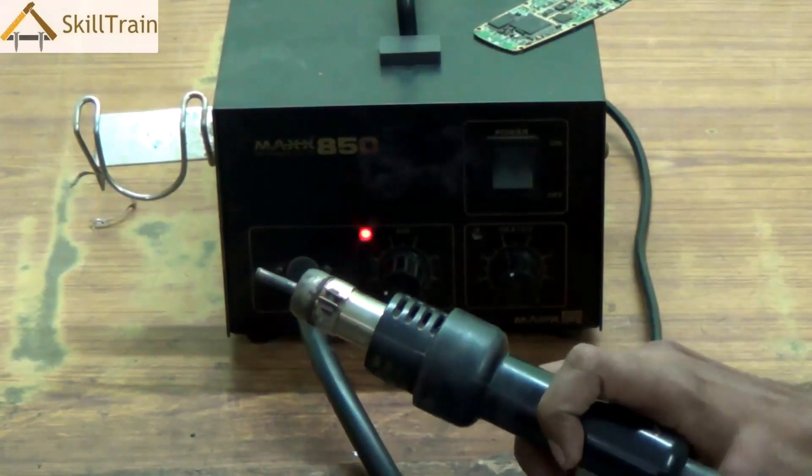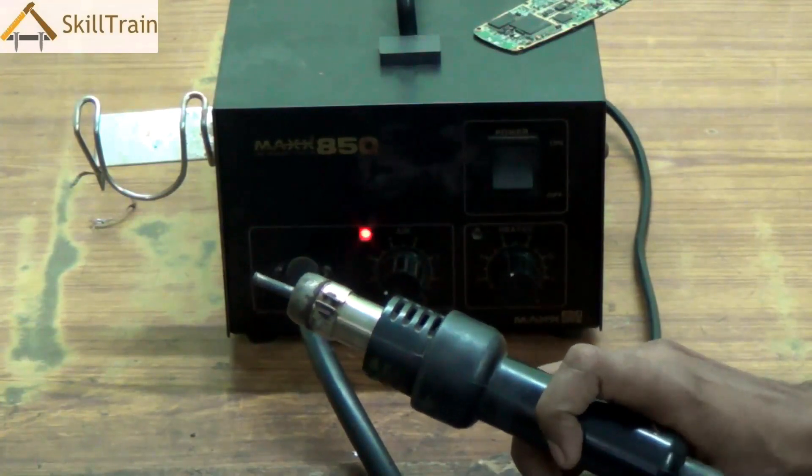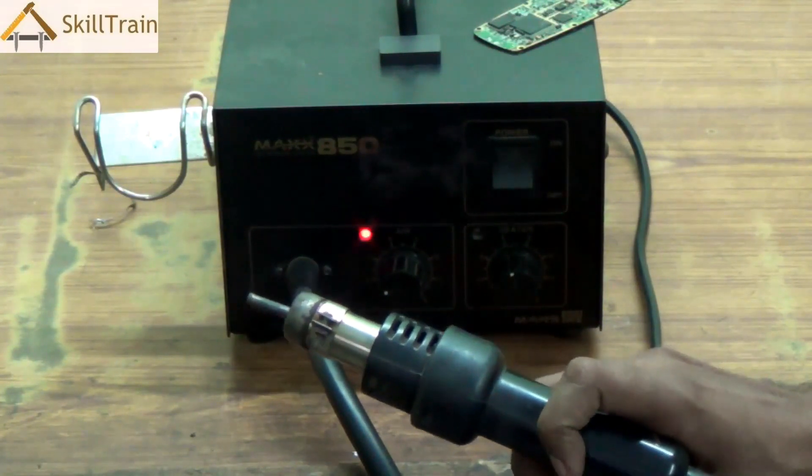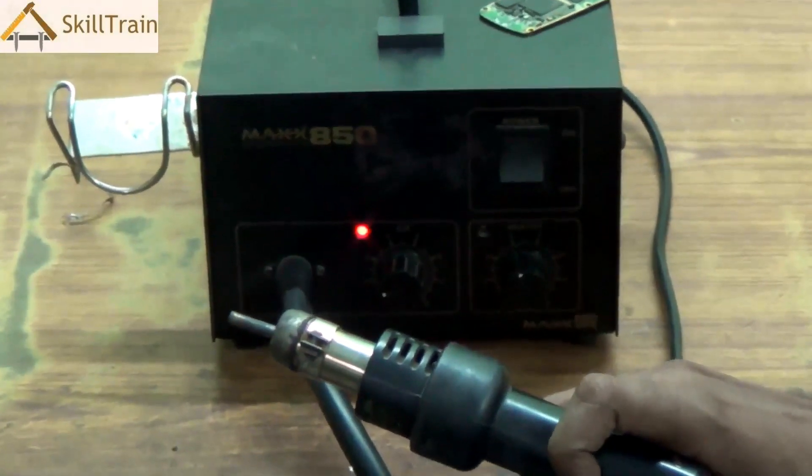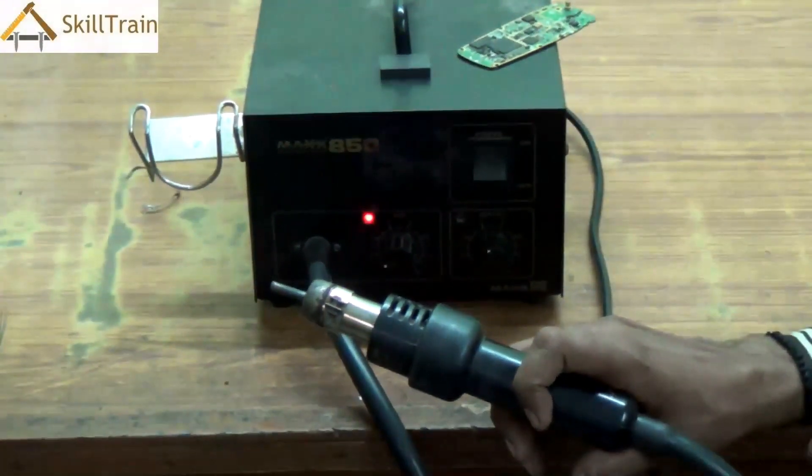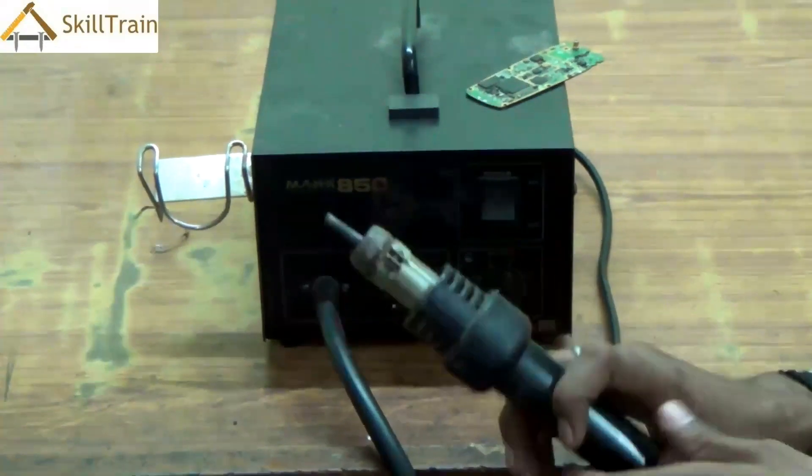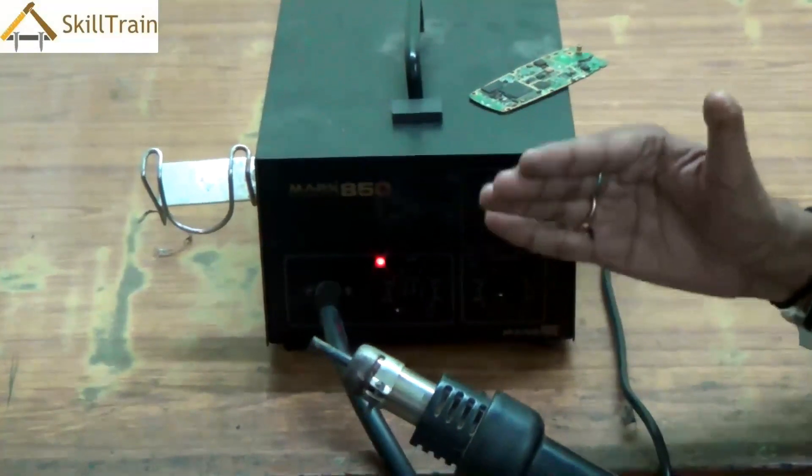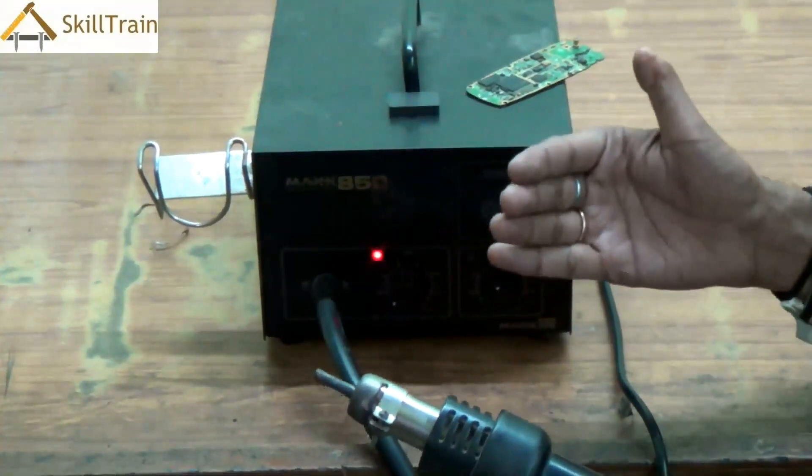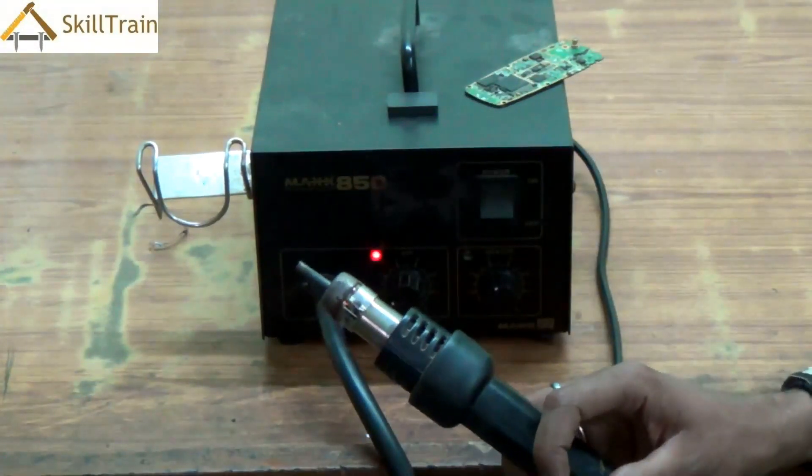Now remember, there are different settings that are required for different components. So ensure that you place the heating element at the right knob to ensure that you don't blow too much hot air because too much heat can spoil the components as well. So you have to be very careful in choosing the right knob position when you are using the heating element.